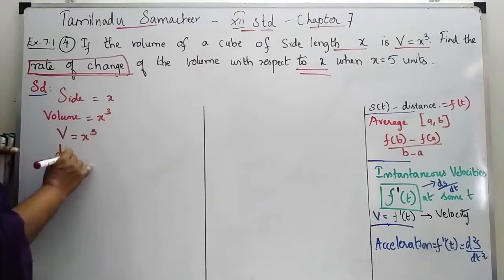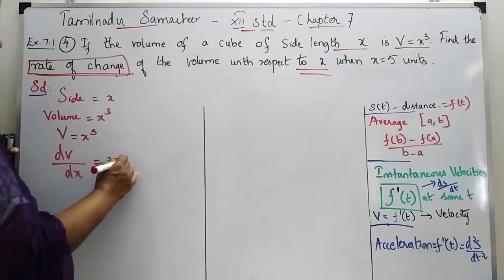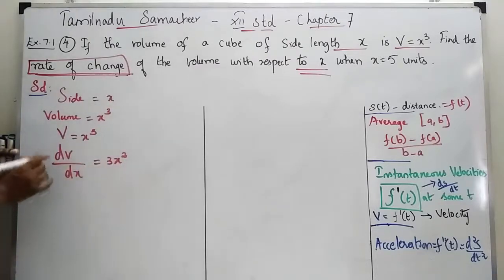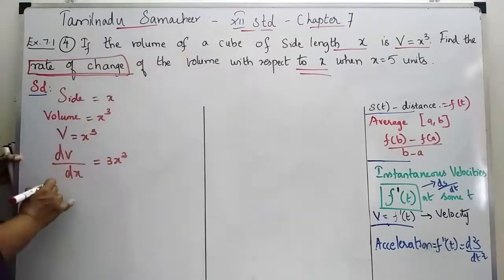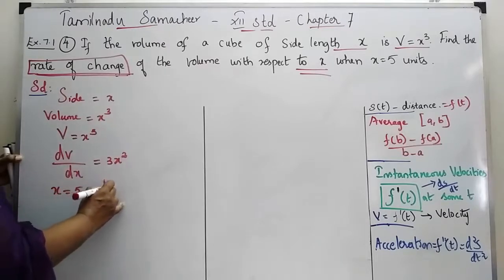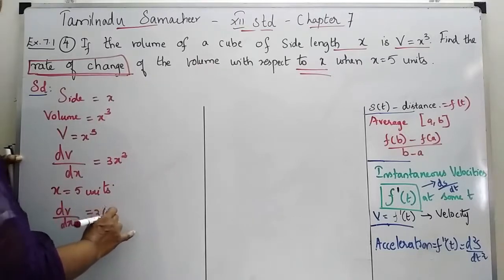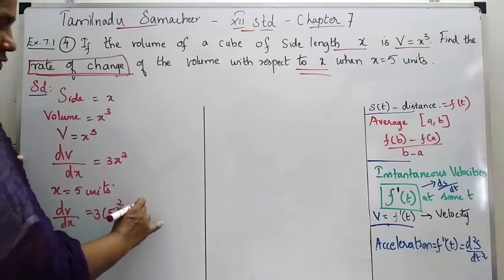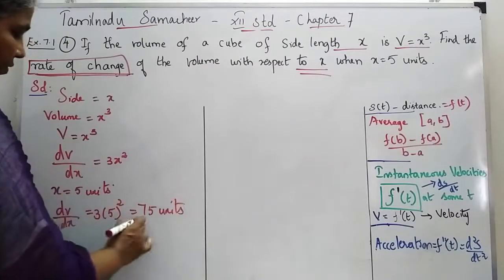So if we have dV/dx, we get 3x squared. So dV/dx is equal to 3 into 5 squared, which equals 3 into 25, equals 75 units.